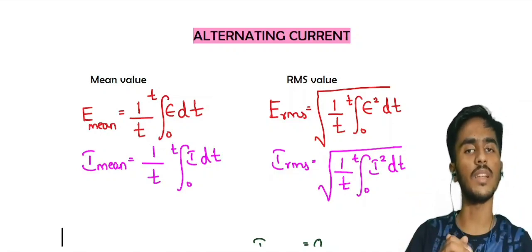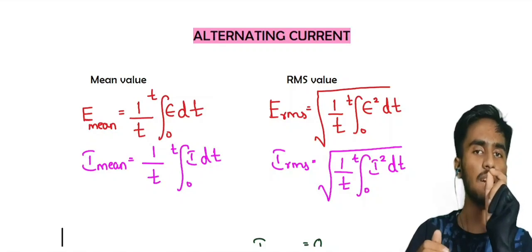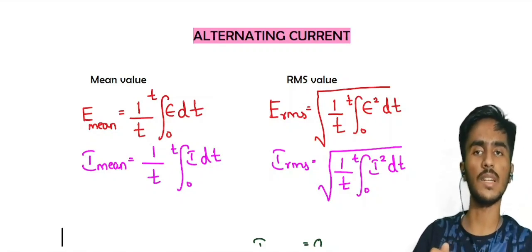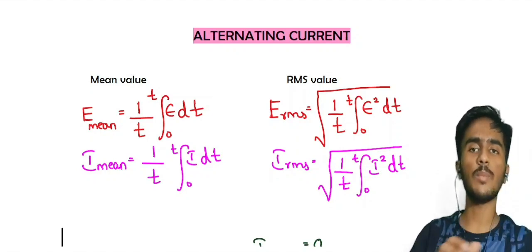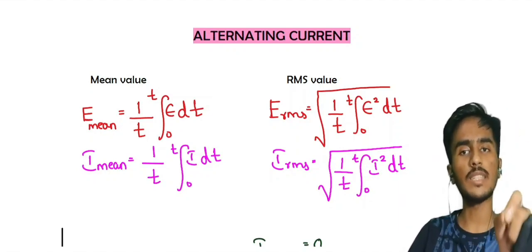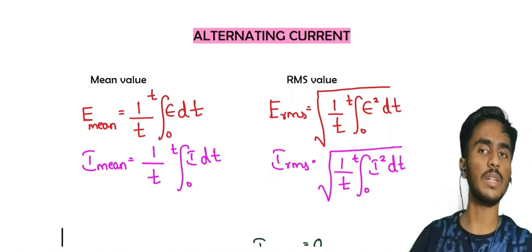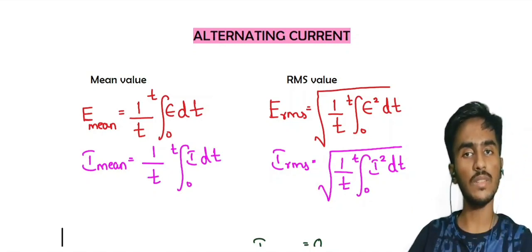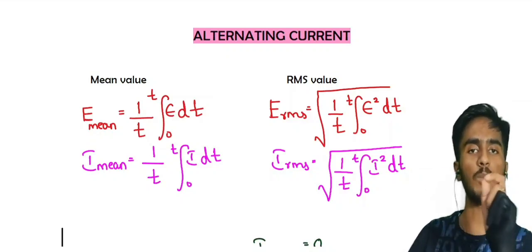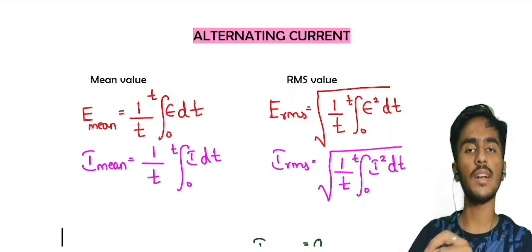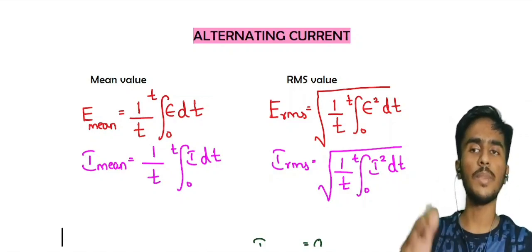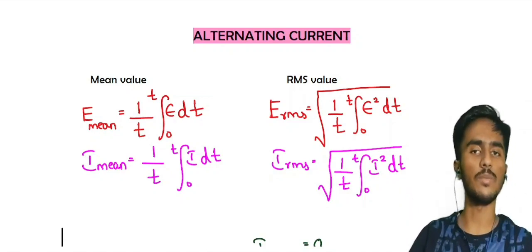If you use these formulas, you can apply them to an alternating current equation. For example, take E equal to some equation, or I equal to some equation. Substitute E or I into the formula, perform the integration, and you get the mean value or RMS value.